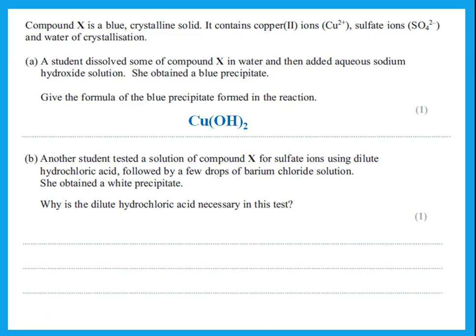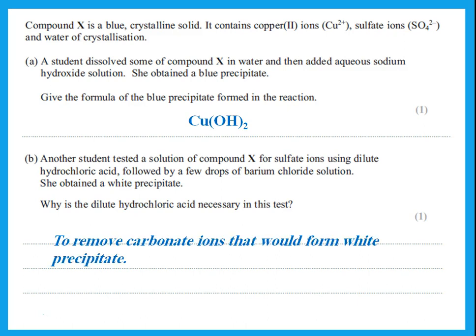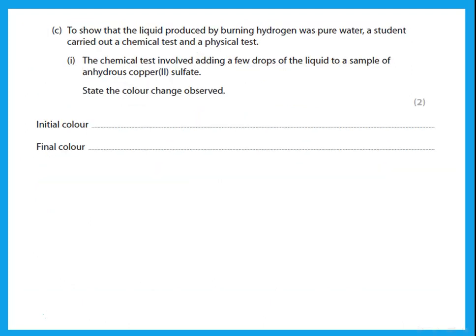Another student tested compound X for sulfate ions using dilute hydrochloric acid followed by a few drops of barium chloride. Why is the dilute hydrochloric acid necessary? When testing for sulfate, you add acid first to remove any carbonate ions that may be present, which would otherwise also form a white precipitate.